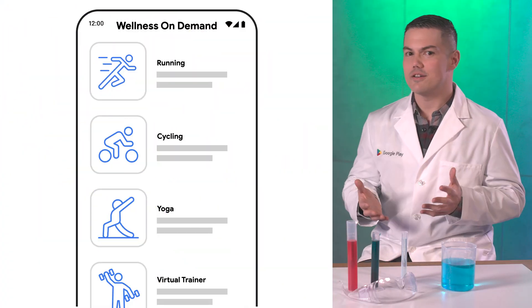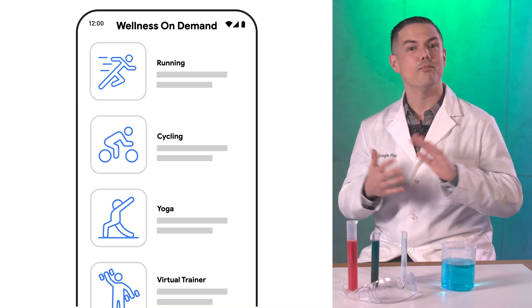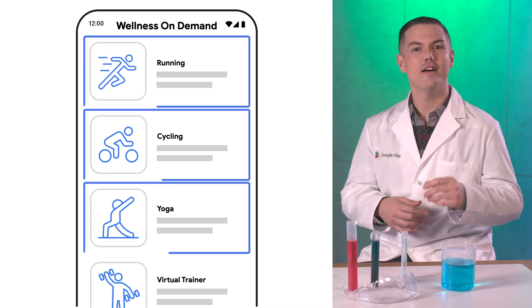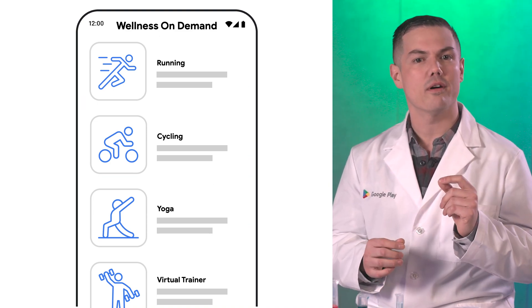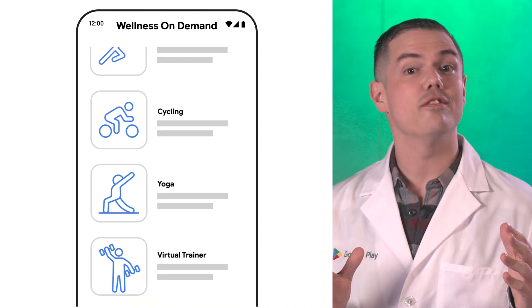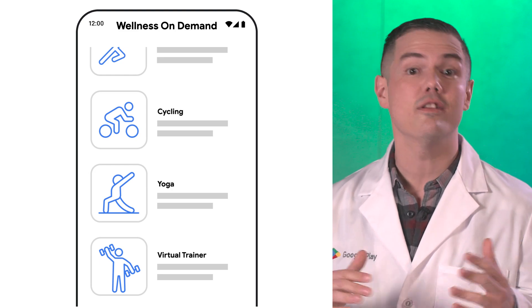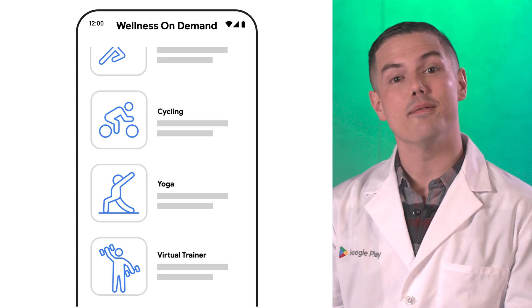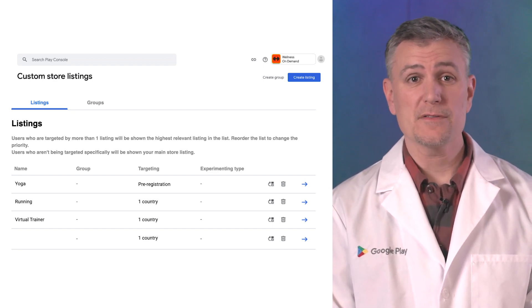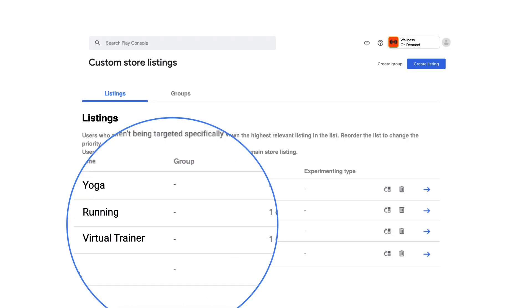Now let's imagine you have a fitness app that covers many different types of activities like running, cycling, and yoga. You also recently launched a popular virtual personal trainer feature. You plan to market these features and activities to different audiences outside Google Play. To make your store listing more relevant based on what your users may be interested in, you create a store listing focused on yoga, another focused on running, and another emphasizing the virtual personal training feature.